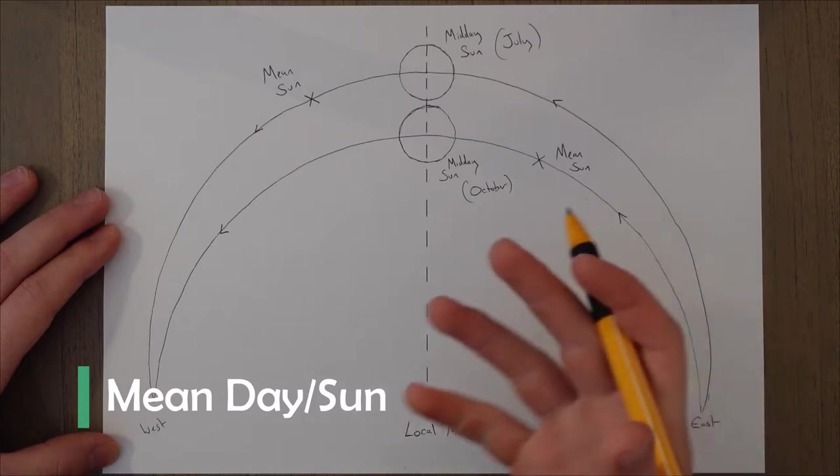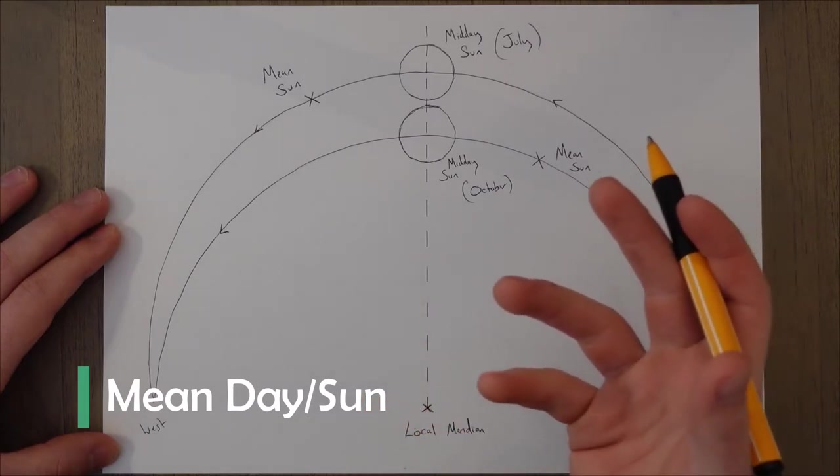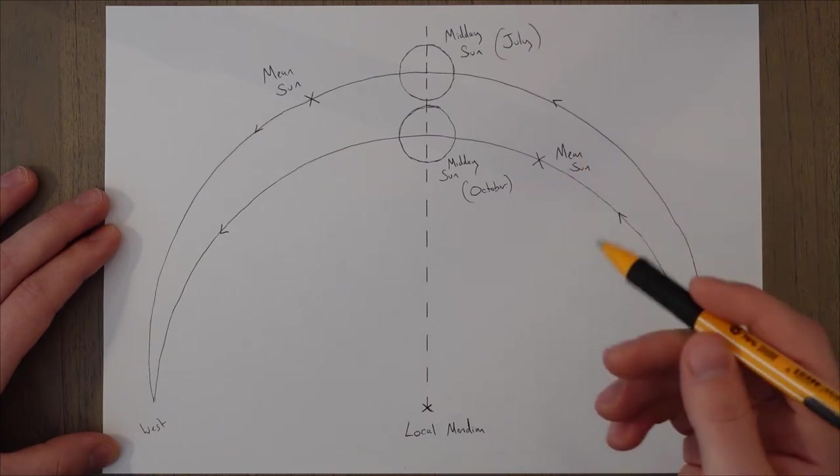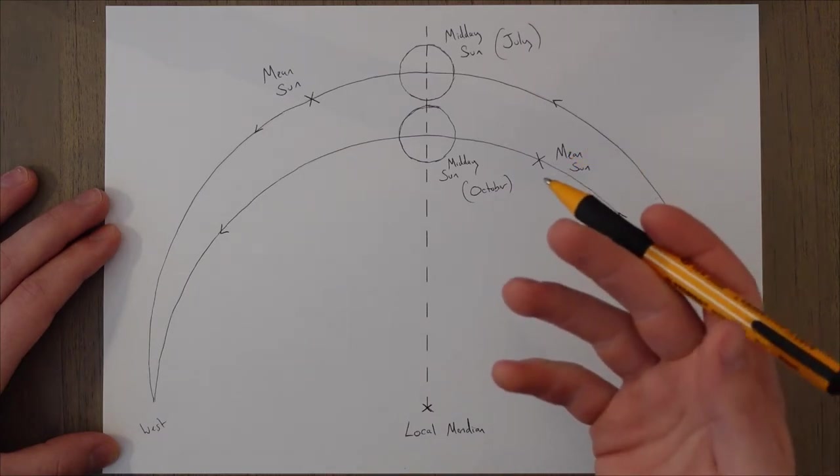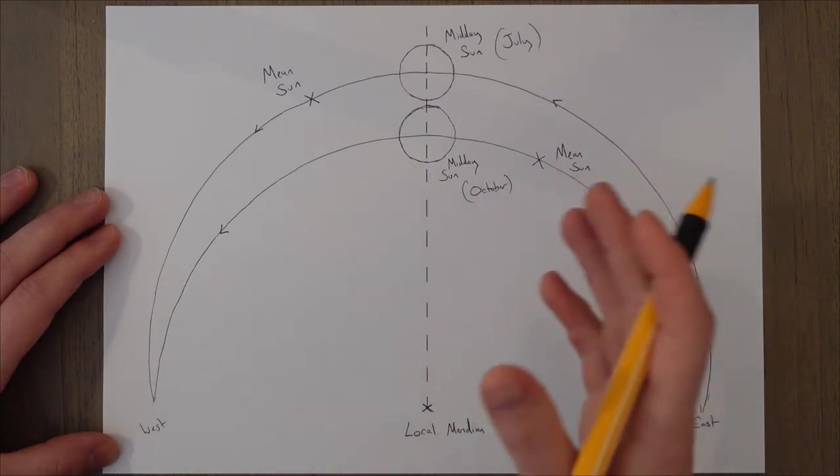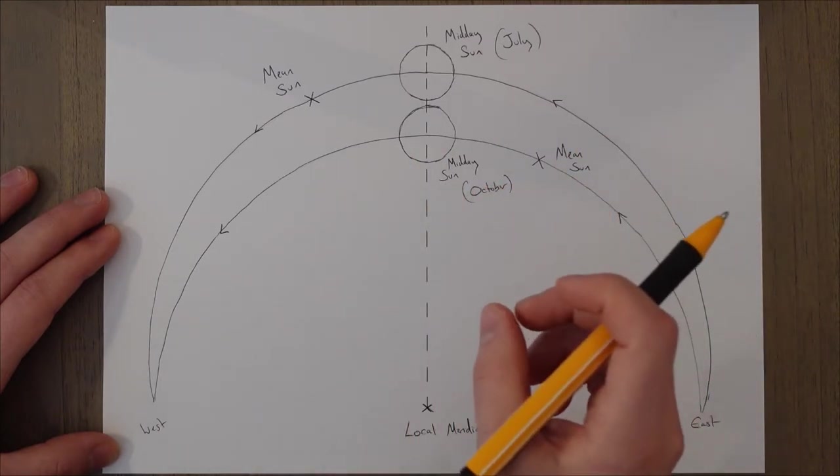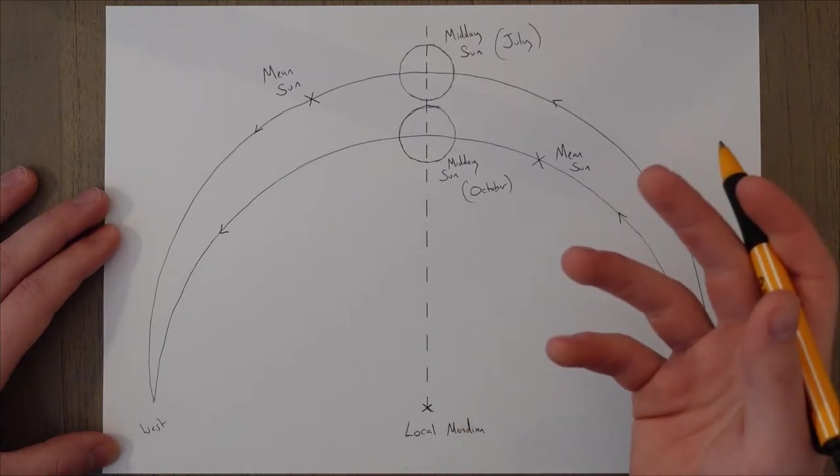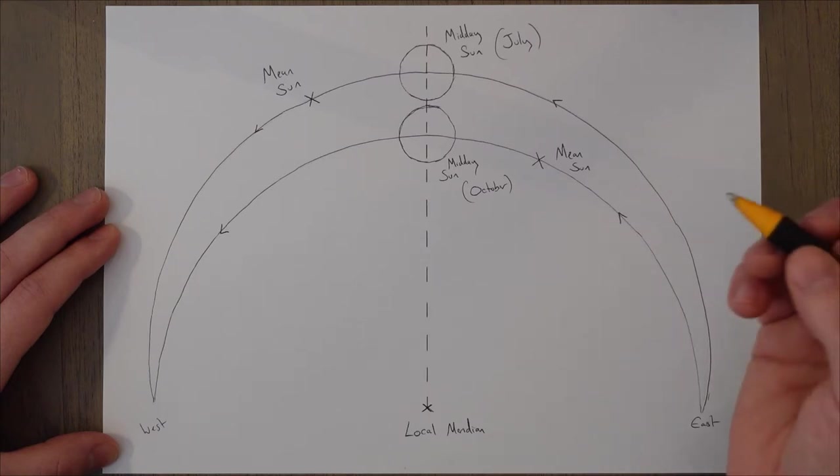The sidereal day is a more accurate measure of time than the apparent solar day, due to the changing nature of the sun's position throughout the year. So to make a solar day more usable, we take an average of all the variations in the length throughout the year and then create the mean solar day, which we define as a constant 24 hours.